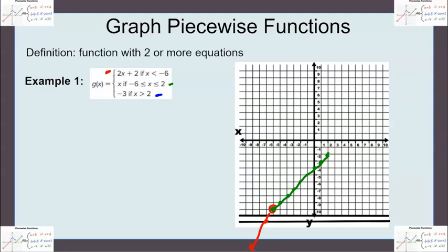And then the blue, it's going to equal negative 3 when x is greater than 2. So when x is greater than 2, it's going to have an open circle at 2 negative 3 because it can't equal 2.